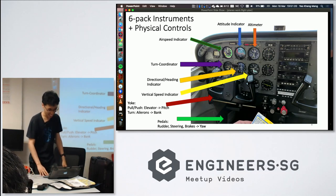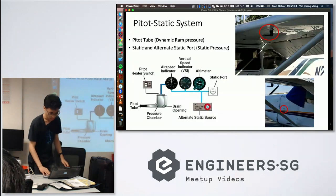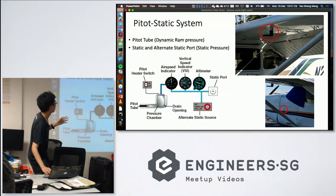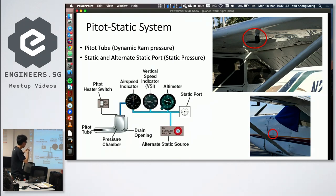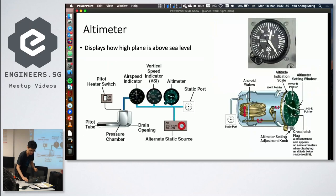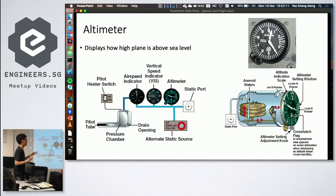The pitot-static system explains how several instruments work. There are two main components: the pitot tube, which faces forward and captures incoming air, and the static port, which measures the ambient air pressure surrounding the aircraft. The altimeter is connected only to the static port — as the aircraft climbs, the air gets less dense, and the altimeter detects this via the static port.